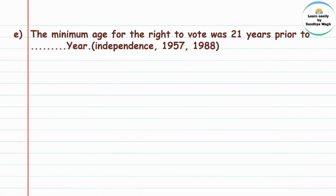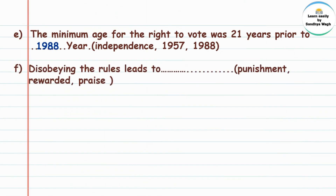The minimum age for the right to vote was 21 years prior to dash year — independence, 1957, or 1988? 'Right to vote' manje matdan karnyacha adhikar. Answer: 1988 — matdan karnyachya adhikarsathi kimaan vay 1988 purvi 21 years ase hote. Next: disobeying the rules leads to — punishment, reward, or praise? Answer: punishment.